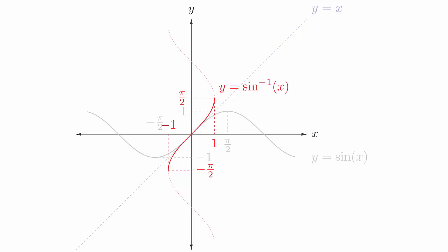But by restricting the range to the interval negative pi over 2 to pi over 2, we get a graph that does represent a function. This is the same effect as restricting the chart of values from earlier.